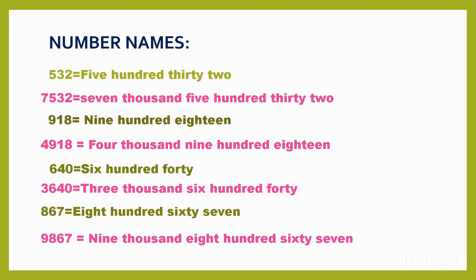Next one is 640. Now in thousands: 3,640. Then 9,867: nine thousand eight hundred sixty-seven. N-I-N-E T-H-O-U-S-A-N-D, E-I-G-H-T H-U-N-D-R-E-D. So 9,867.